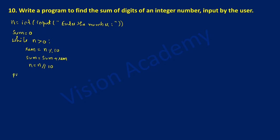After executing these three statements repeatedly while the condition is true, we print the result. In double quotation marks I write 'the sum of digits is equal to', put a comma, and write the variable sum.